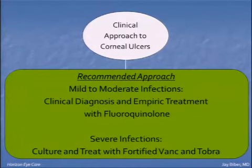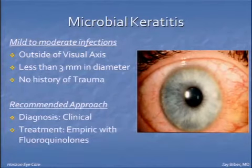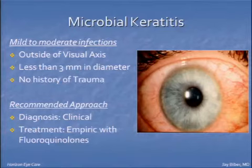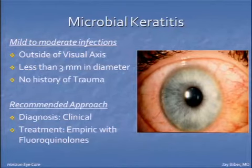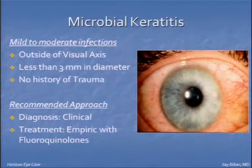The recommended approach is: for mild to moderate infections, a clinical diagnosis with empiric treatment; for severe infections, you want to culture and treat with vancomycin and tobramycin. So what is a mild to moderate infection? Consider our 22-year-old — a lesion outside the visual axis, less than three millimeters in diameter, with no history of trauma. In this case, a clinical approach with initiation of fluoroquinolone treatment is indicated, and this patient should do well.